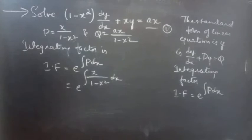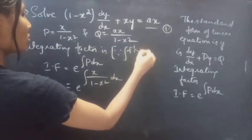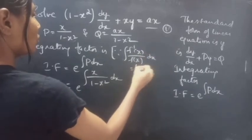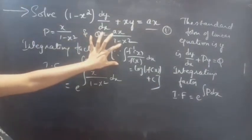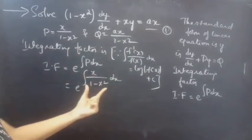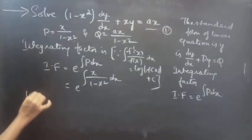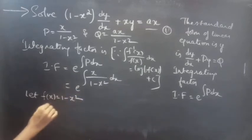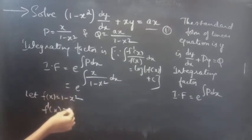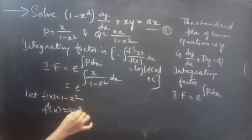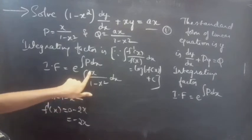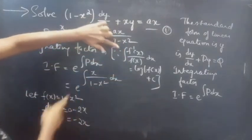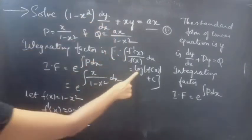Now let 1 minus x squared equal some function f(x). We know that the integral of f'(x)/f(x) dx equals log|f(x)| plus c. To apply this formula we need f(x) and f'(x). Let f(x) equal 1 minus x squared, then f'(x) equals 0 minus 2x, which equals minus 2x.